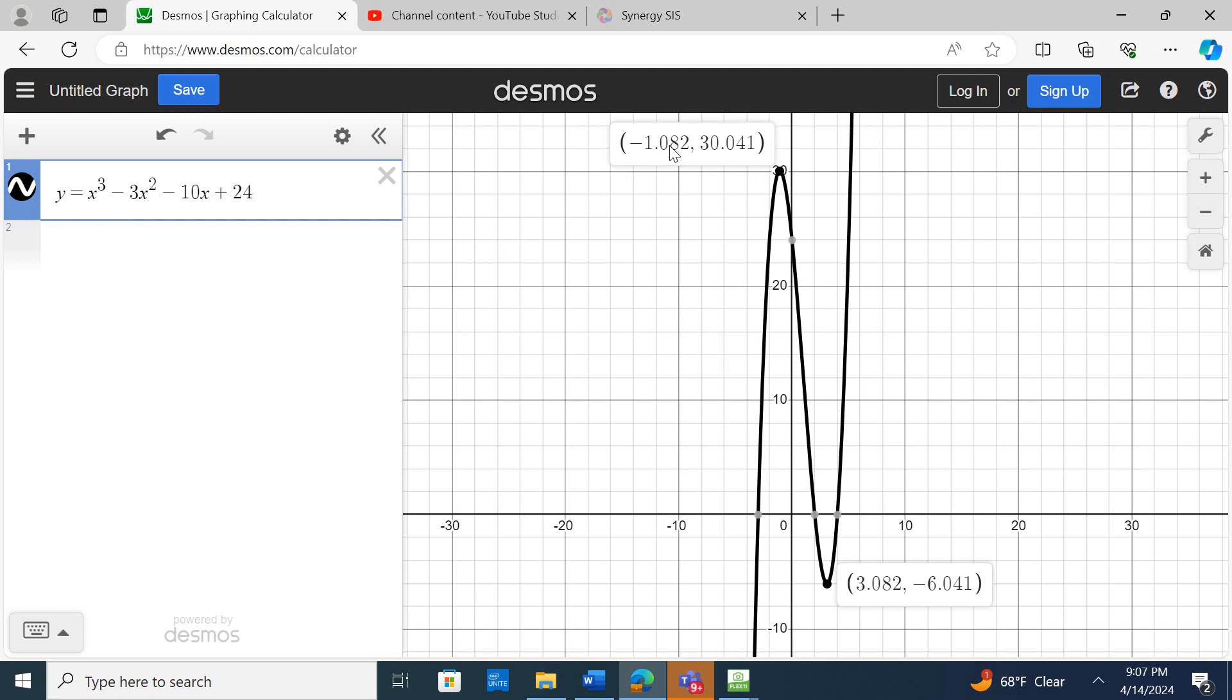And here we can see this is the x value at this point, and this is the x value at this point. So the next question is, where is it decreasing? So from x equals negative 1.082, after it leaves that point all the way until it reaches 3.082, it is decreasing.